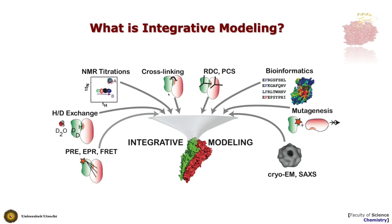You can also do cross-linking experiments detected by mass spectrometry to get information about possible distances between specific residues in your system, though those are not very accurate. You also have shape information, which could be high resolution from cryo-EM or low resolution from small angle X-ray scattering, for example.